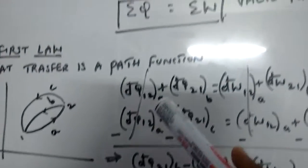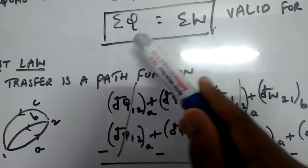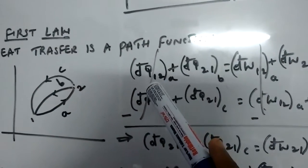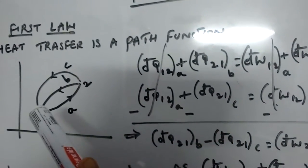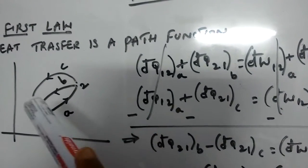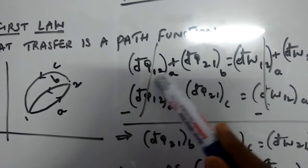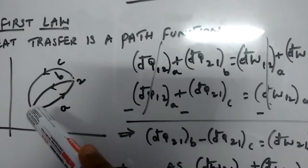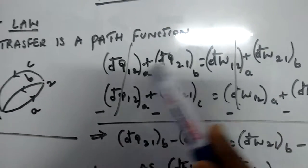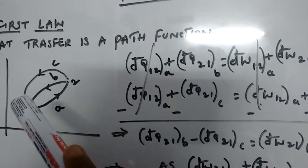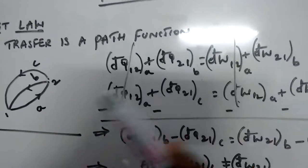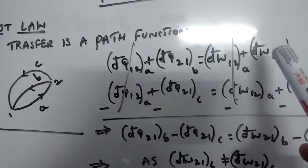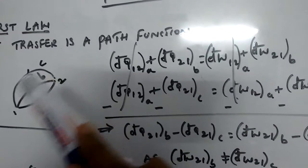According to the first law, ΣQ = ΣW. So the summation of heat transfers from state 1 to state 2 through path A, dQ₁₂(A), plus dQ₂₁(B) from state 2 to state 1 through path B, equals the work involved: dW₁₂(A) plus dW₂₁(B).